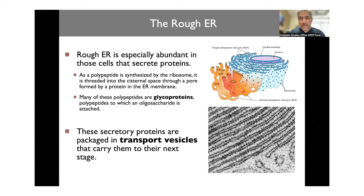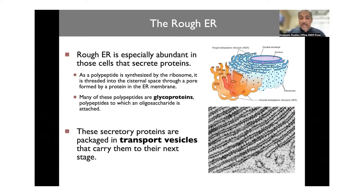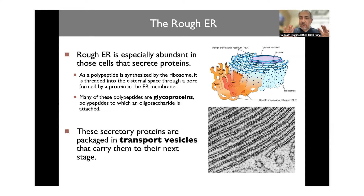The rough endoplasmic reticulum is rich in ribosomes, making it the site where protein synthesis takes place — the protein factories of the cell. Once a protein is synthesized, the fact that ribosomes are sitting on a membrane allows the protein to be directly passed on to the membrane. The movement of these proteins — their packaging in the smooth ER, delivery to the Golgi, and processing in the Golgi — all happen on the membrane, so the ability of the protein to be made and integrated into the membrane is very vital.